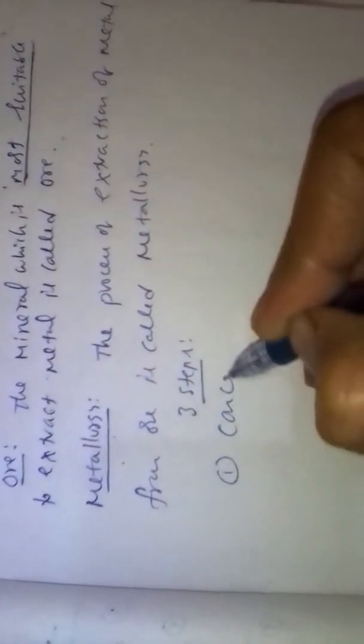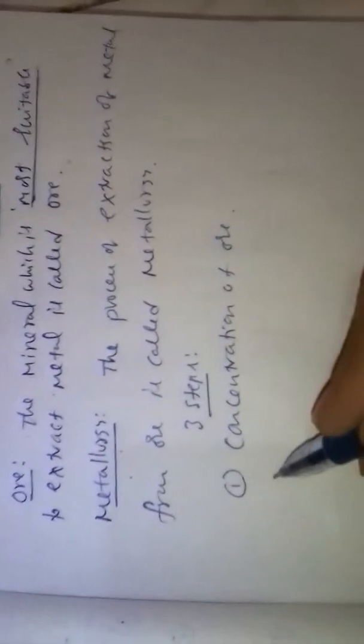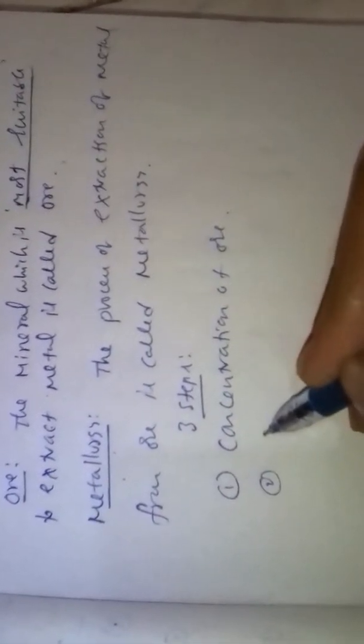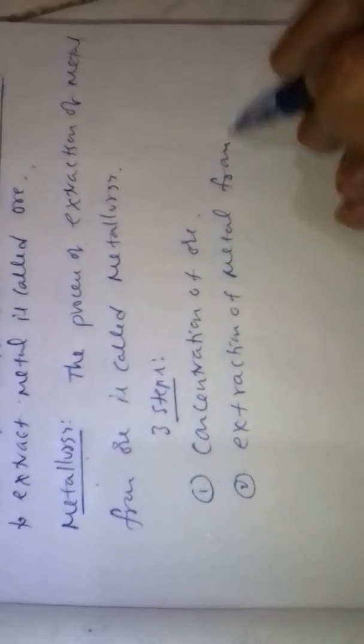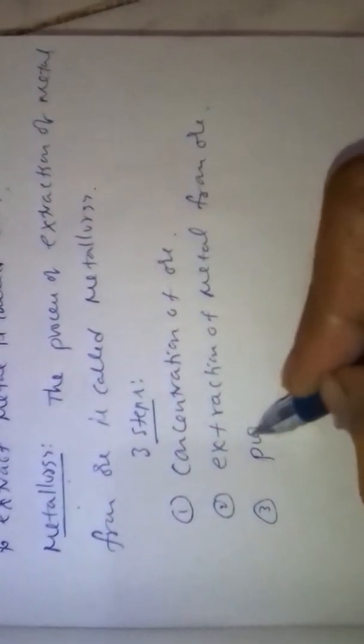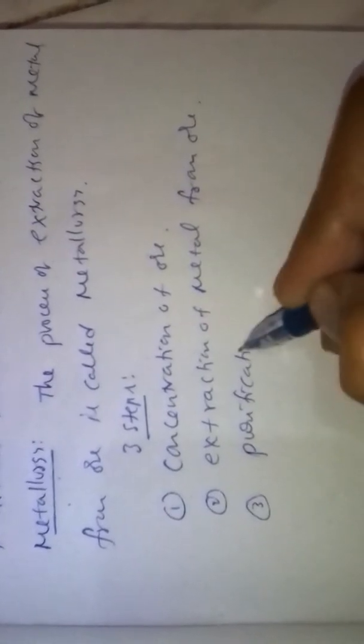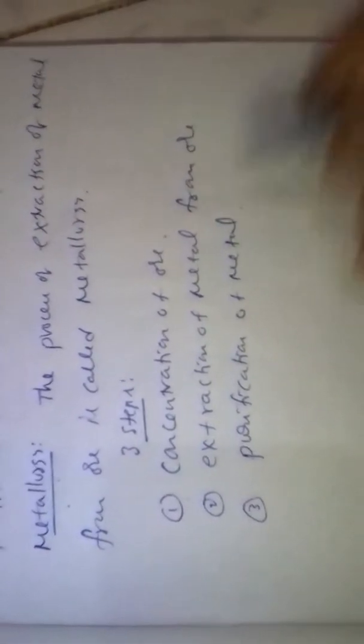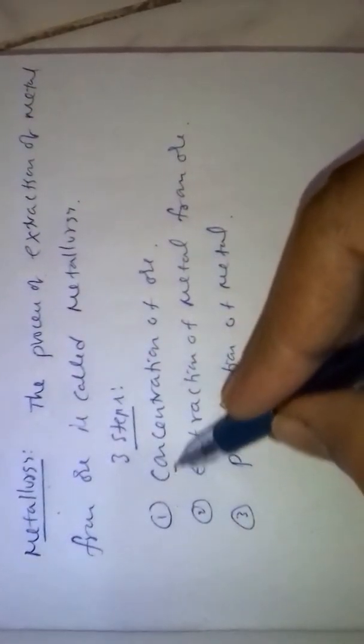Metallurgy involves three steps: first, concentration of ore; second, extraction of metal from ore; and third, purification of metal. The first step, concentration of ore, means we remove the earthy materials present in the ore, because ores occur in the earth's crust.